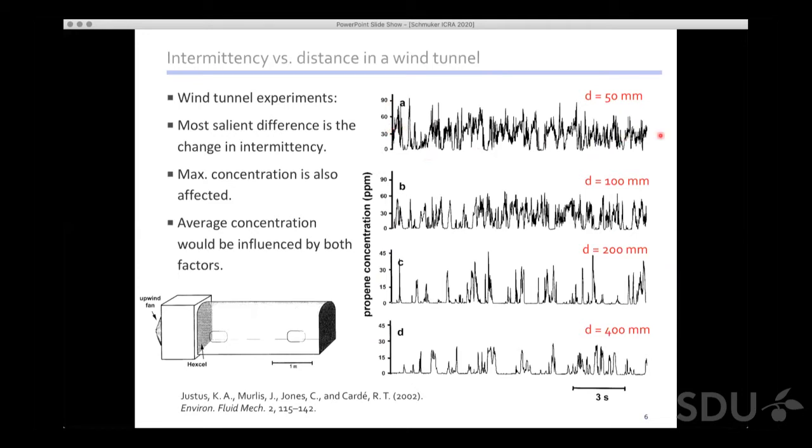When you look at the time scale of odor concentration, close to the source it's very spiky with lots of activity and high average concentration, though the variance is so high. Further away from the source, the maximum concentration goes down, but what's much more striking is that the intermittency changes. Further away we have many periods with no odor at all and then spikes again. The intermittency encodes distance to the source much stronger than any concentration gradient.